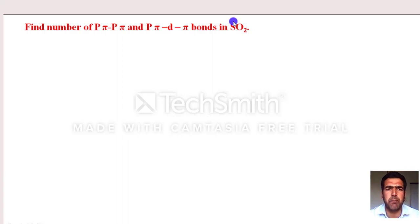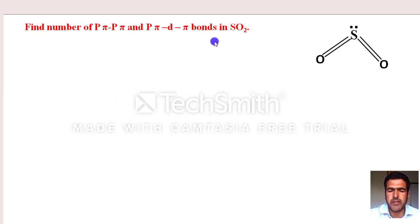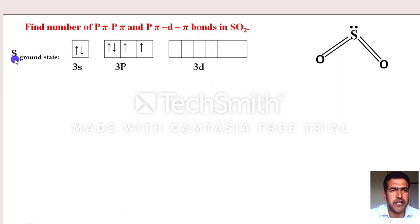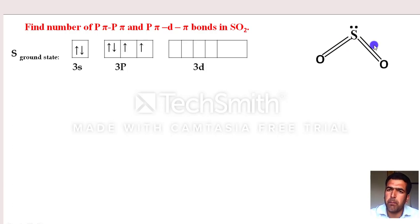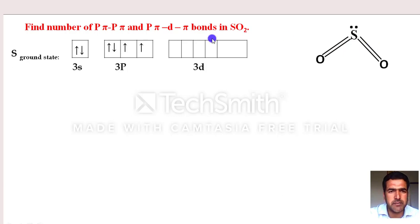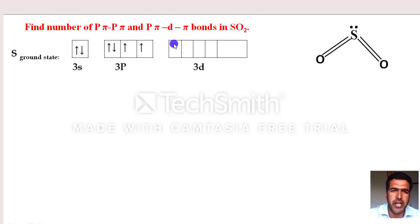Let's apply this to SO₂. The question asks: how many pπ-pπ and pπ-dπ bonds are present in sulfur dioxide? First, write the outer electronic configuration of sulfur in ground state: 3s², 3p⁴. Total bonds formed by sulfur in SO₂ are 4 (counting sigma and pi). We need 4 half-filled orbitals, but in the ground state we only have 2. So we must perform excitation — one electron jumps to the 3d orbital.